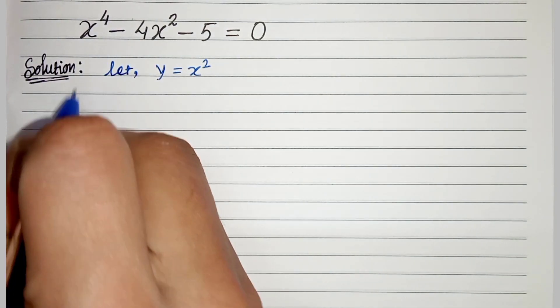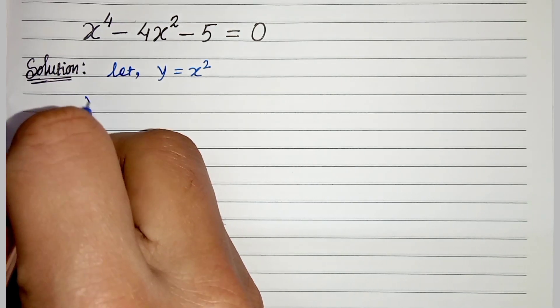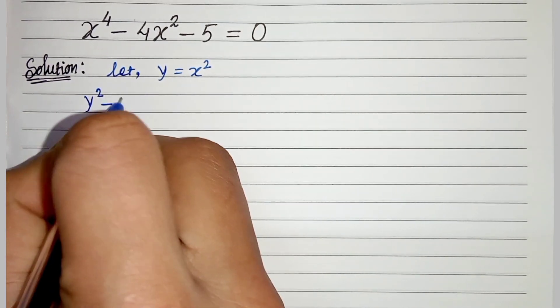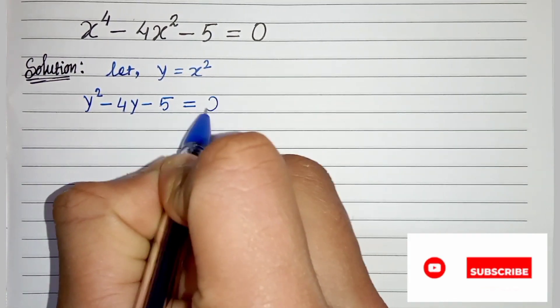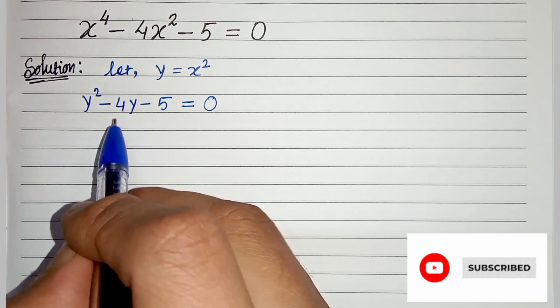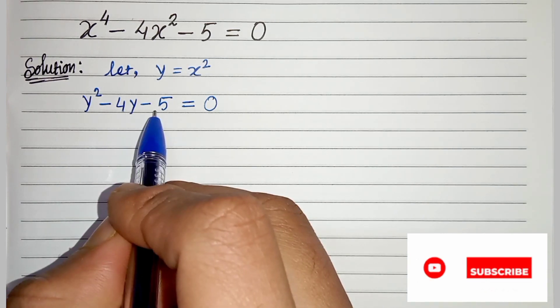So from this we can write x to the power 4 is y square minus 4y minus 5 equals to 0. Here the sum is minus 4 and the product is minus 5.